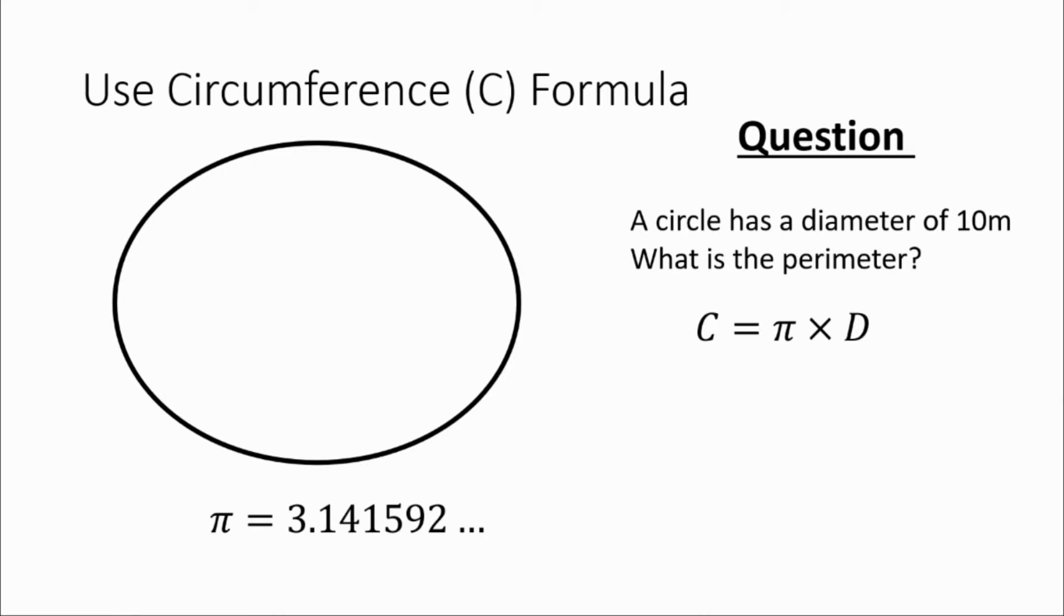So what we need to do is look at that equation, copy it down again, but replace D with the diameter, which is 10. So we now have the circumference equals pi multiplied by 10. You can actually leave that as just 10 pi.